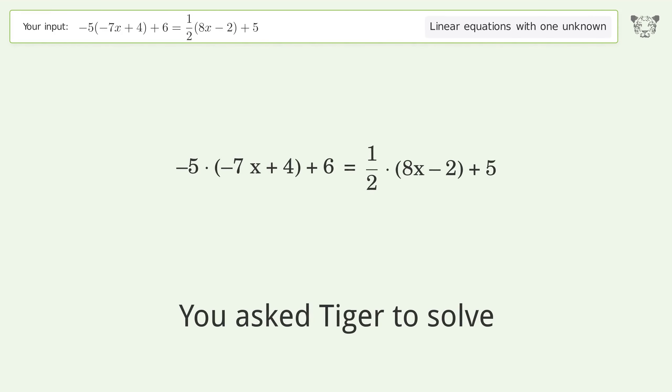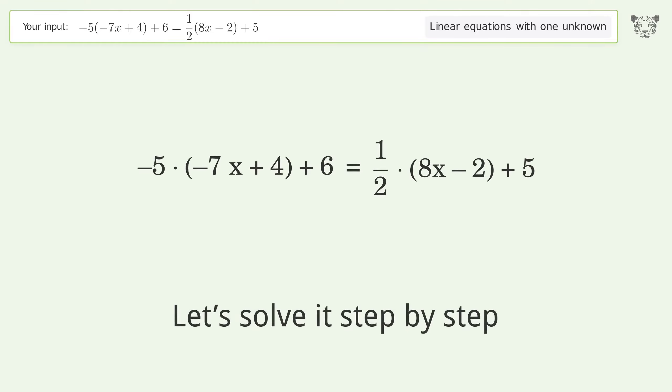You asked Tiger to solve this. This deals with linear equations with one unknown. The final result is x equals 18 over 31. Let's solve it step by step. Simplify the expression.